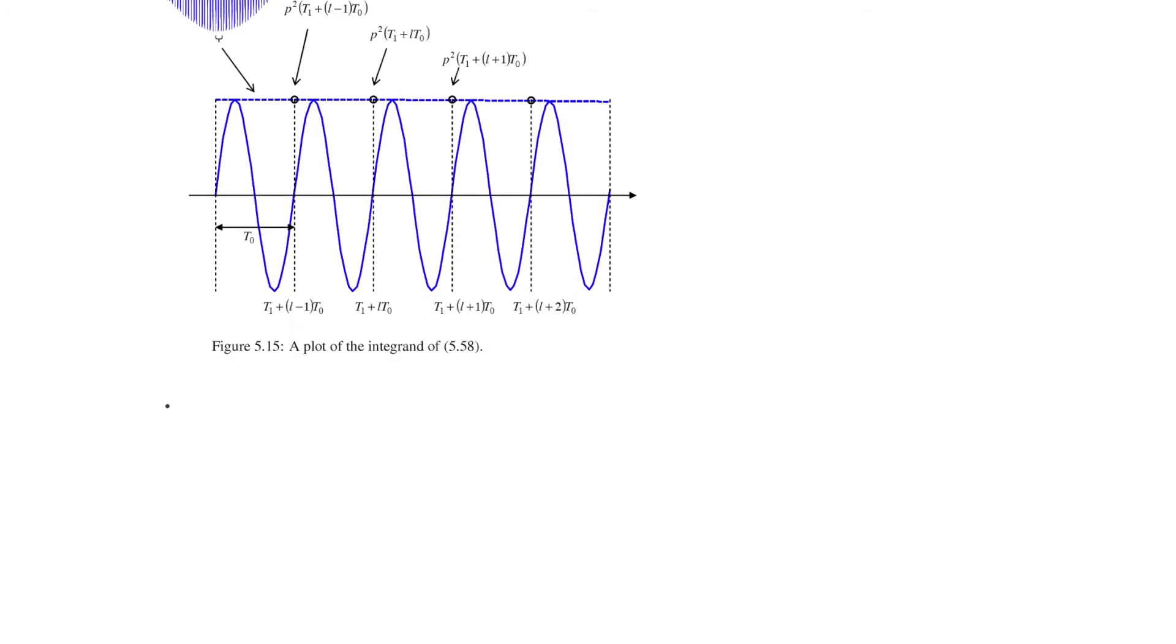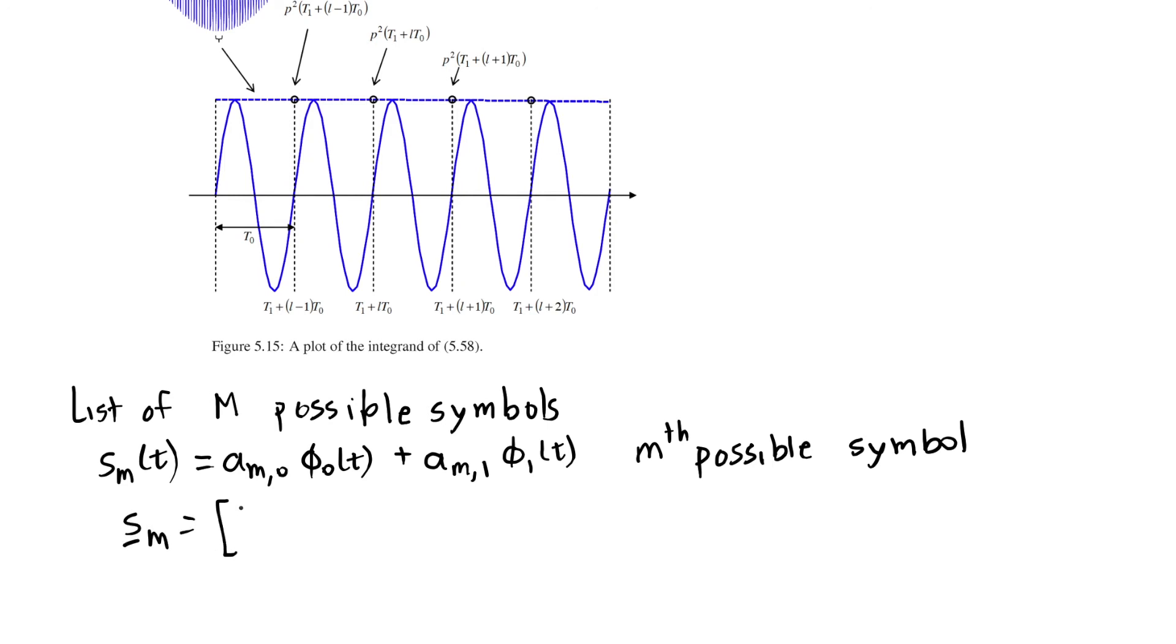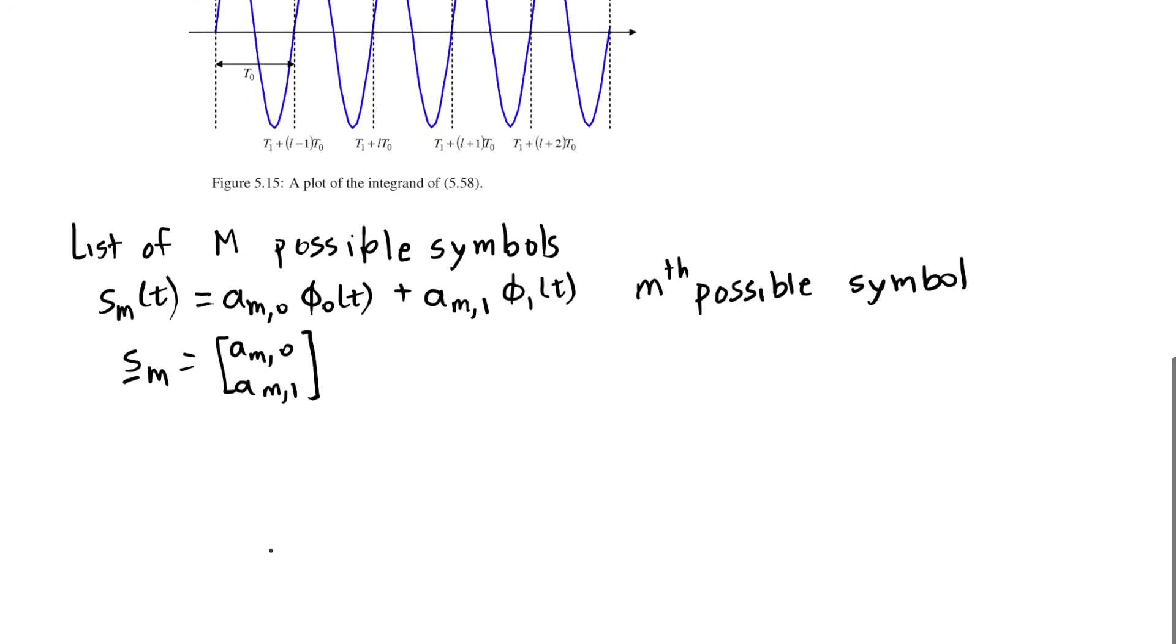That being said, there are lots of modulations that could be described by these two orthogonal basis functions. It all depends on their list of m possible symbols. And we've used sm of t to describe that this is the m-th possible symbol, and we also describe the m-th possible symbol as a vector with the first amplitude and the second amplitude as a two-element vector.